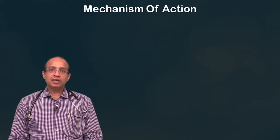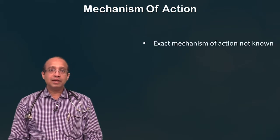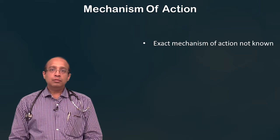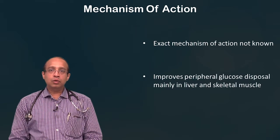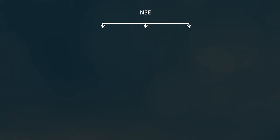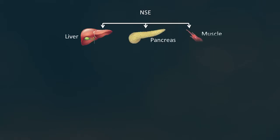The exact mechanism of action is not fully known because there are multiple actions involved. It improves peripheral glucose disposal mainly in the liver and skeletal muscle. At the level of the liver, pancreas, and muscle, it acts via activation of AMP kinase.